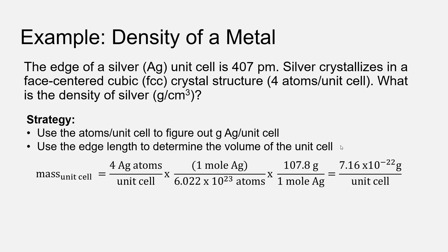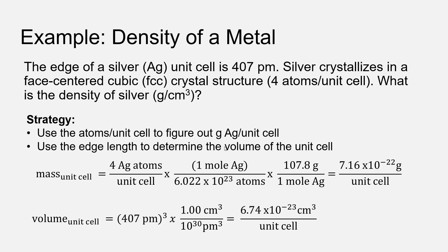Now we need to figure out the volume of the unit cell. The challenging part is that we have the unit cell edge in picometers, but we need the density in grams per cubic centimeter. We calculate the volume of the unit cell by cubing the edge length: 407 picometers cubed. The important thing to remember is that when you cube 407, you also cube the units — so the volume is 407³ picometers cubed.